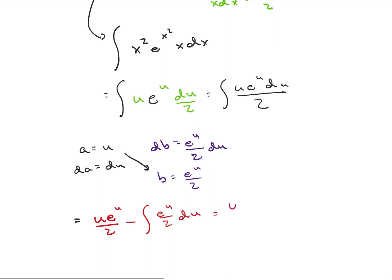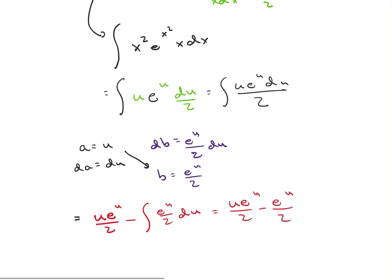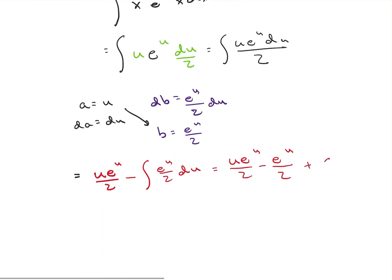Which is then just going to be u e to the u over 2 minus e to the u over 2 plus some integrating constant.